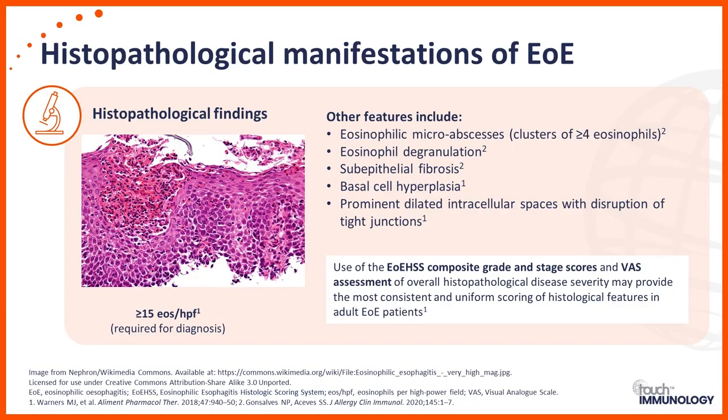The next important component in diagnosing EoE is the histopathologic finding. Eosinophils appear as pink bilobed nuclei cells, typically in the top part of the biopsy specimen — described as superficial layering of eosinophils. More than 15 eosinophils per high-power field makes the diagnosis of EoE. Other features that can be seen include micro-abscesses, which are clusters of more than four eosinophils, eosinophilic degranulation where the granules are visible in the tissue, subepithelial fibrosis, basal cell hyperplasia, and prominent dilated intercellular spaces with disruption of tight junctions — a feature of tissue edema.